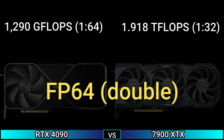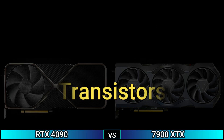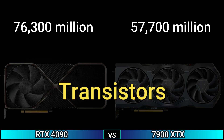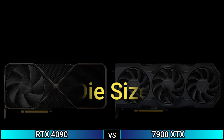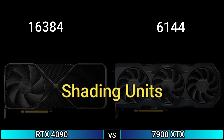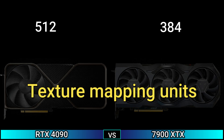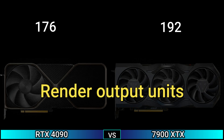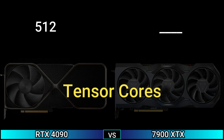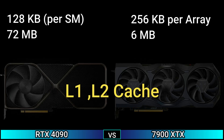FP64 double: 1290 TFLOPS (1:64) and 1.918 TFLOPS (1:32). Process size: 5nm and 6nm. Transistors: 76.3 billion and 57.7 billion. Die size: 609mm² and 529mm². Shading units: 16,384 and 6,144. Texture mapping units: 512 and 384. Render output units: 176 and 192. Tensor cores: 512 and RT cores: 128 and 96. L1/L2 cache: 128KB per SM / 72MB and 256KB / 6MB.